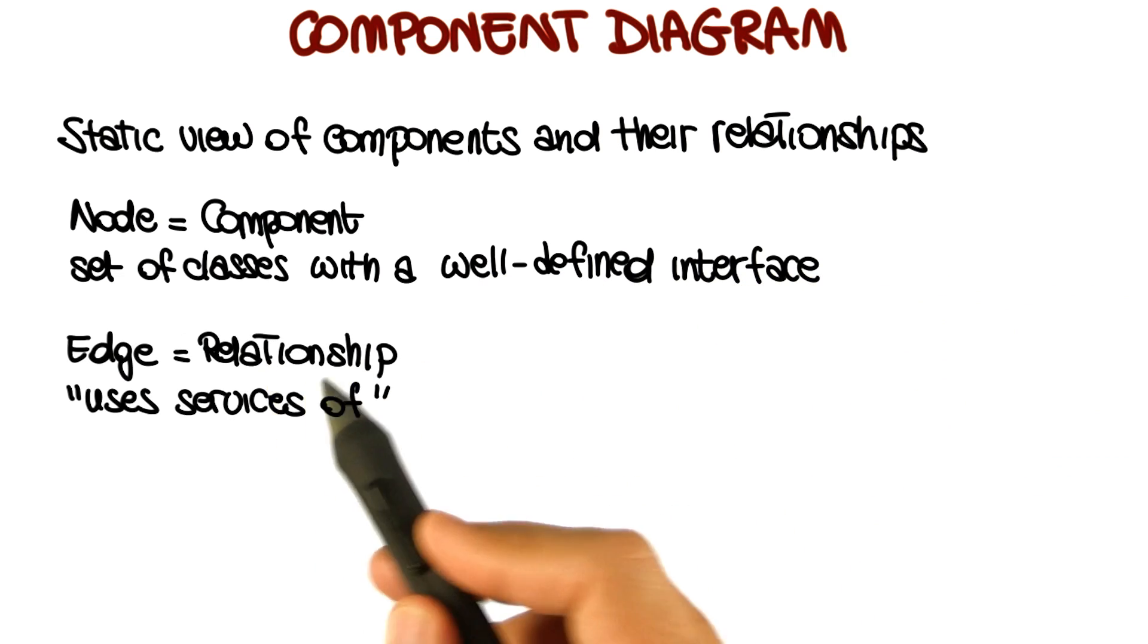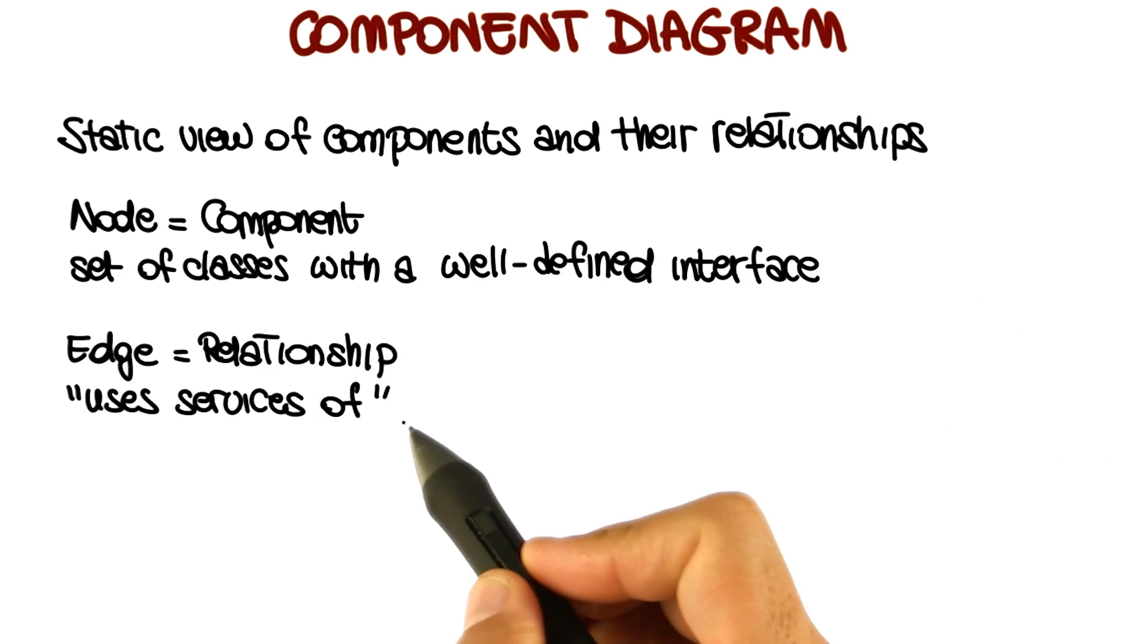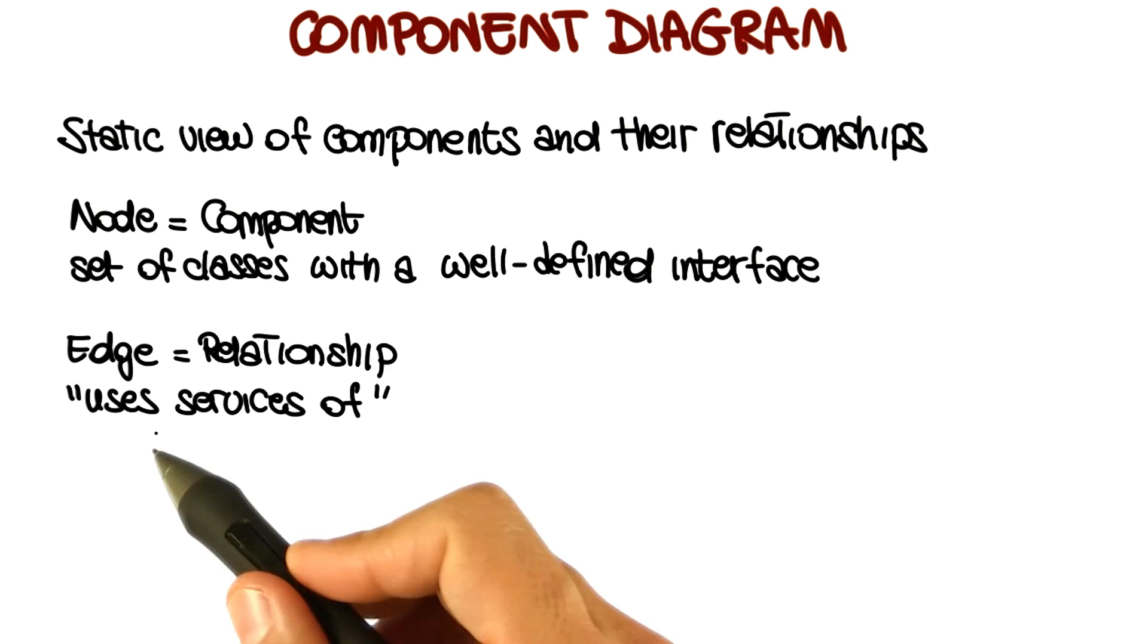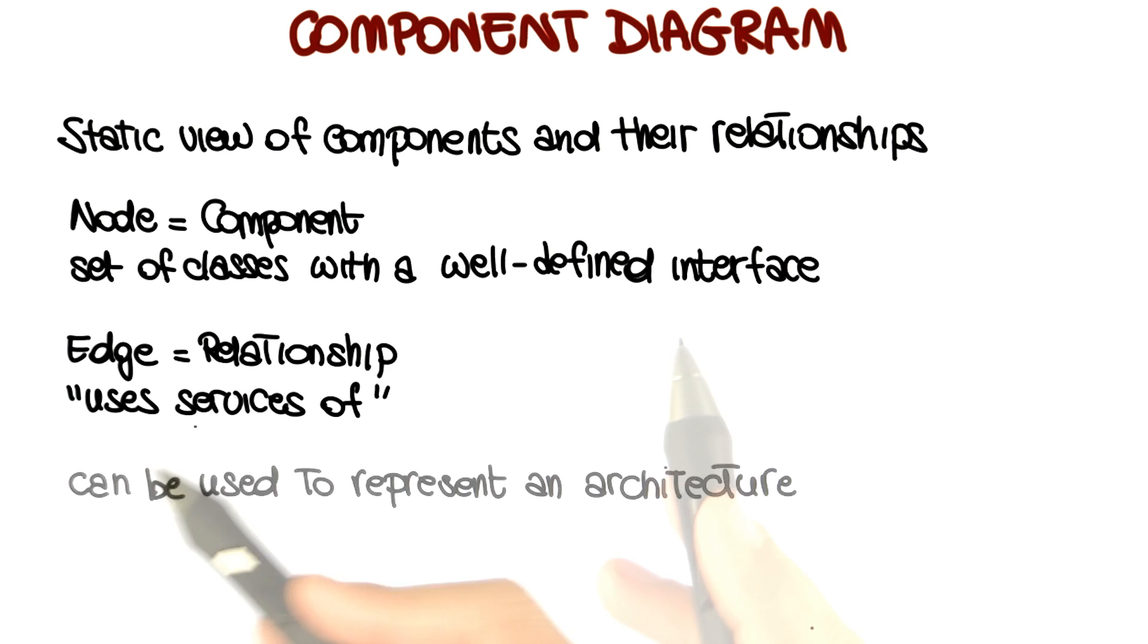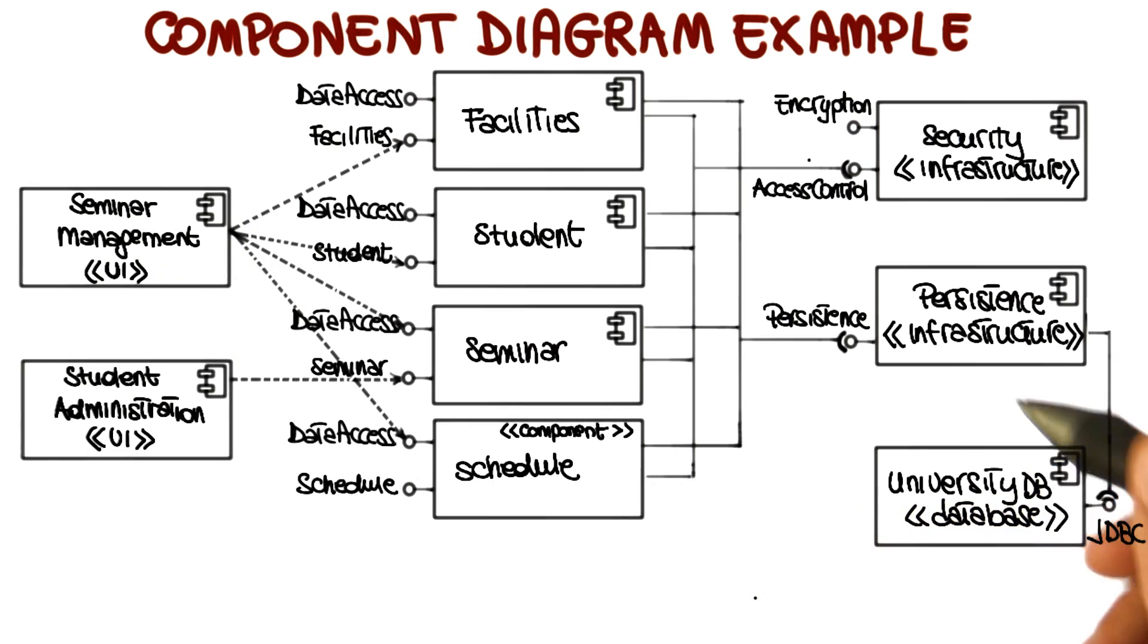Edges, conversely, indicate relationships between the components. You can read this relationship as component A uses services of component B. And notice that component diagrams can be used to represent an architecture, which is a topic that we will cover extensively in the next mini course.